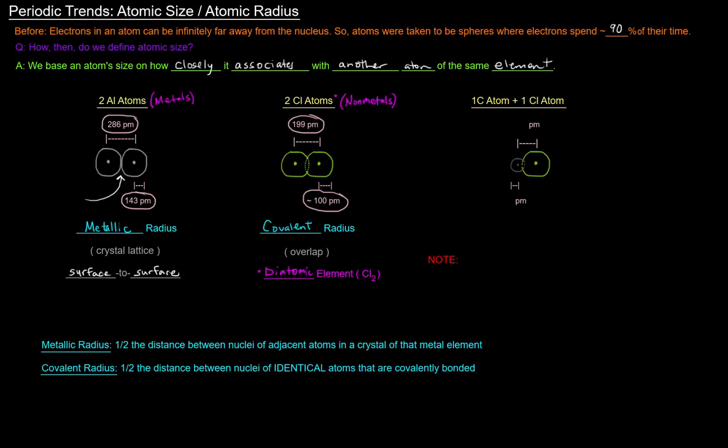So the covalent radius is defined as half the distance between nuclei of identical atoms that are covalently bonded, and that's the case here. Now that's particularly useful because if we measure the atomic radius of a non-metal in its diatomic form, and that same atom binds to a different atom, then we can use the fact that we know this atomic radius to find out the atomic radius of the other atom.